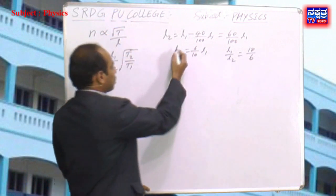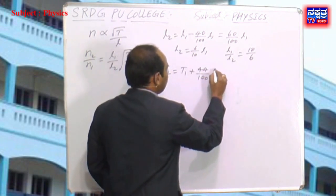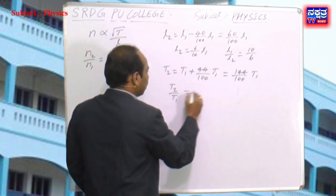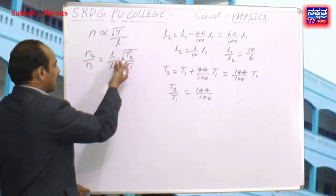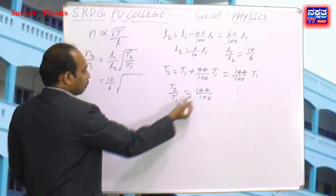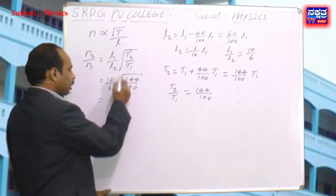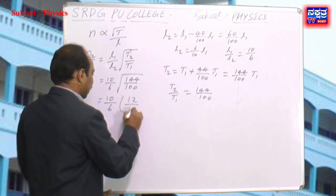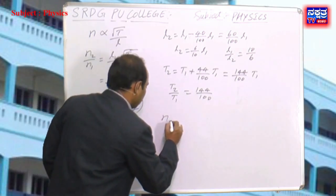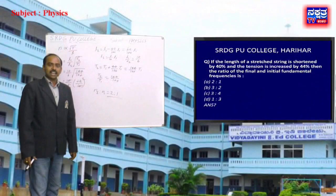T2 = T1 + 44% of T1 = 1.44 T1, so √(T2/T1) = √(144/100) = 12/10. Therefore n2/n1 = (10/6) × (12/10) = 12/6 = 2/1. The ratio of final to initial fundamental frequencies is 2:1. Option a is the correct answer.